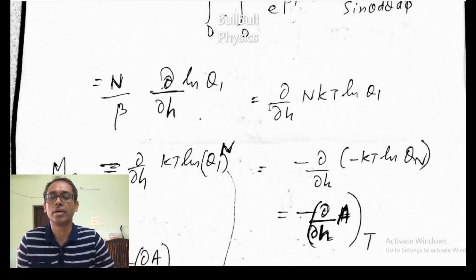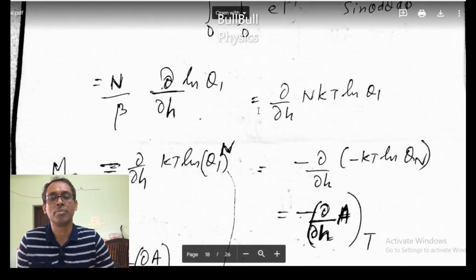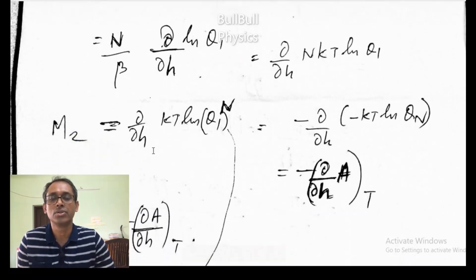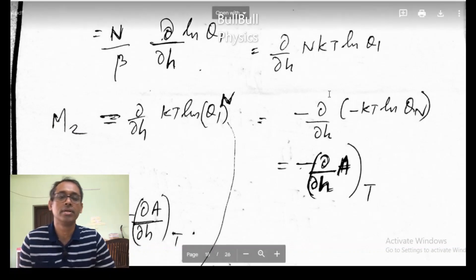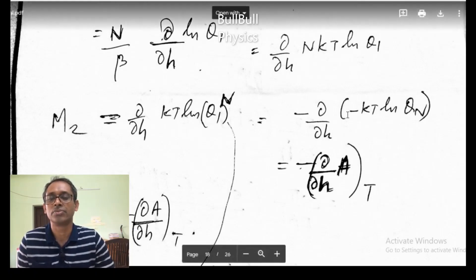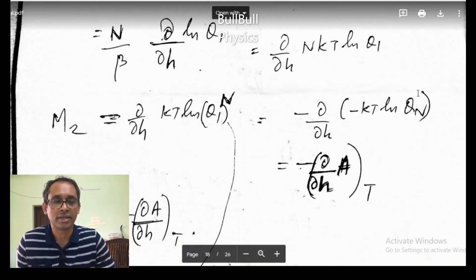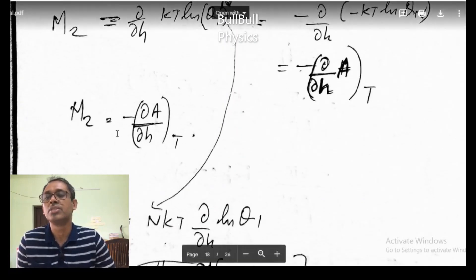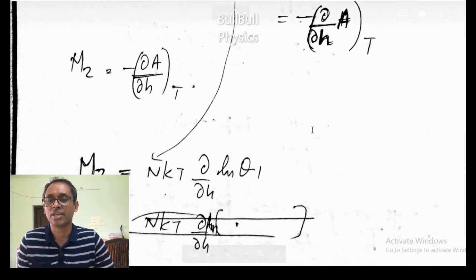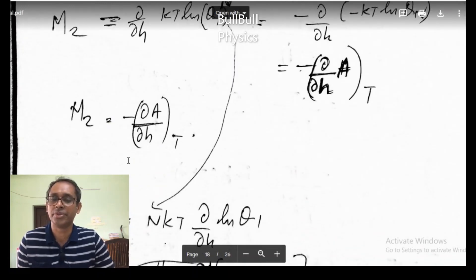This can also be written as (d/dH) of N k_B T log Q_1. Since minus k_B T log Q_1 is the Helmholtz free energy, we have M_z equals minus (d/dH) of the Helmholtz free energy. So the magnetization in the z-direction is minus the partial derivative of the Helmholtz free energy with respect to H. This equation we will be using later on.